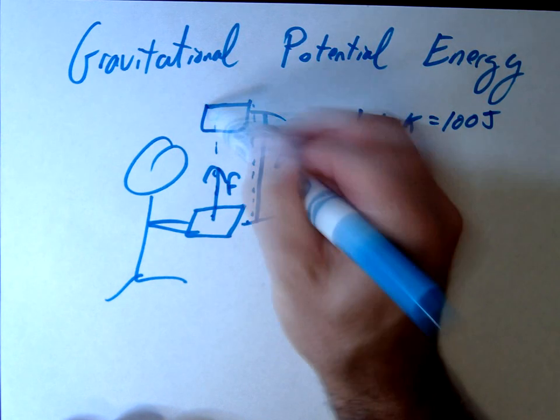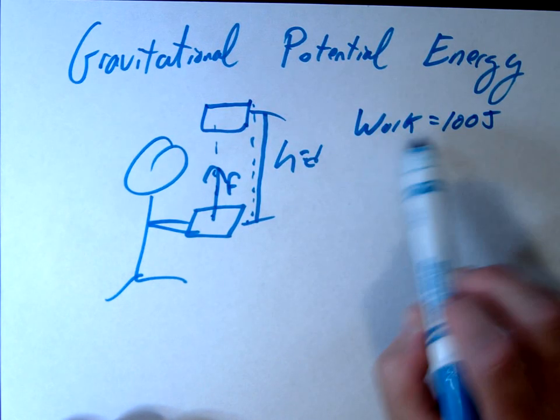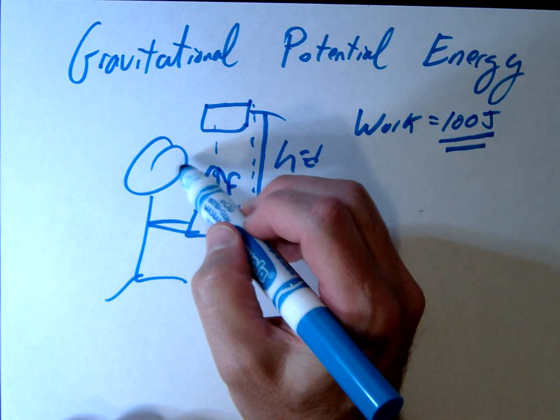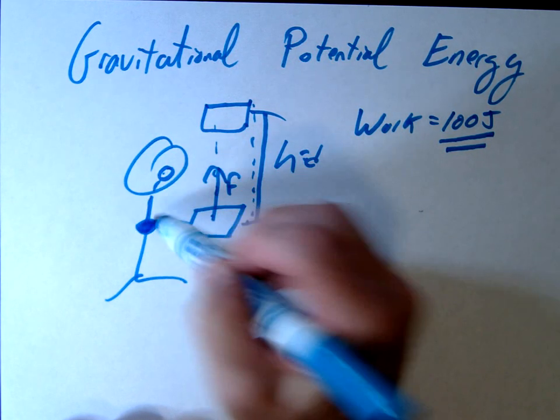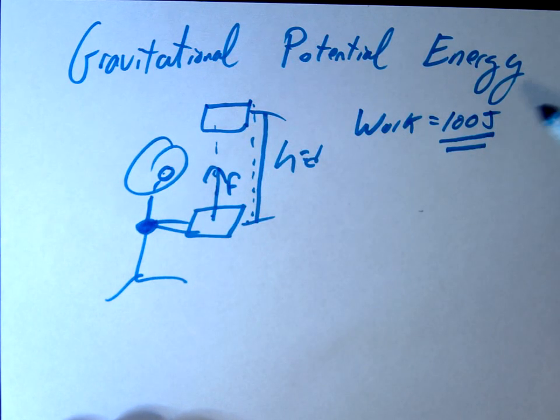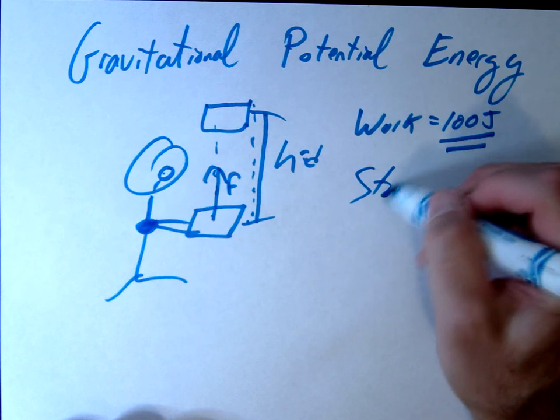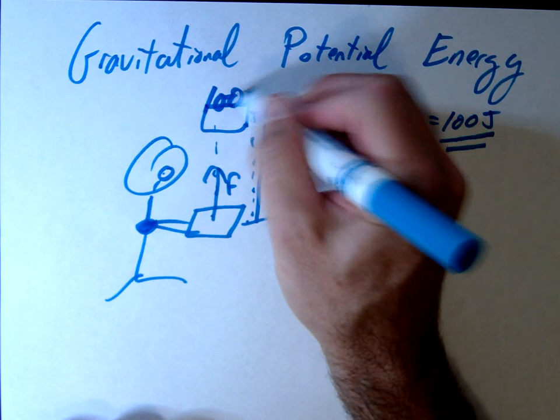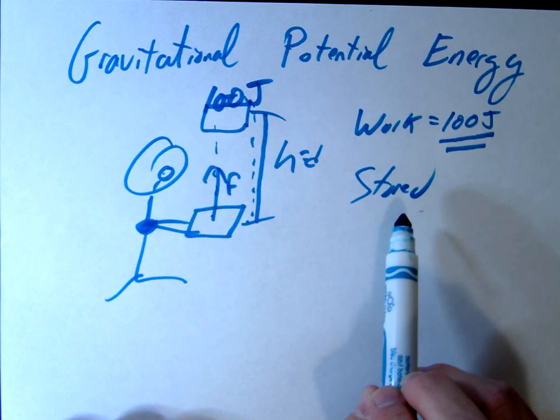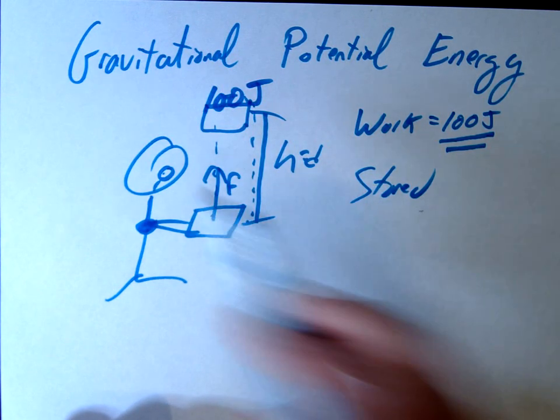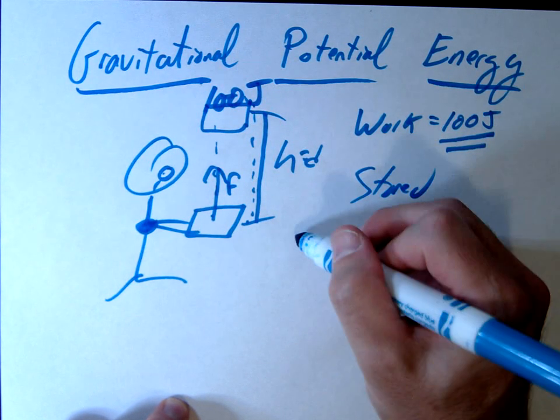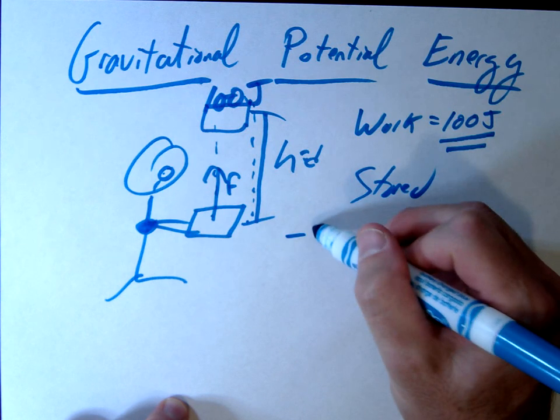And let's say the book's up here. So the big question is, where did that work go? Where did that energy go? I had to eat some food, right? I ate some food. There it is. I changed that into work, 100 joules of it. So where did it go? Well, we'd say that energy is now stored in the book itself. So the book now has 100 joules of stored energy.